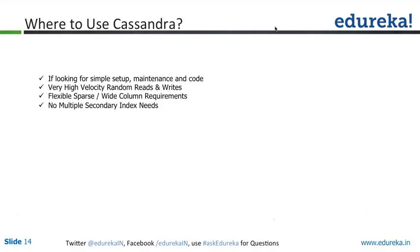If you want to do it manually, you can always do it. Cassandra provides very high velocity of random reads and writes compared to other node-scale systems, because of its columnar storage capability and distributed decentralized architecture.